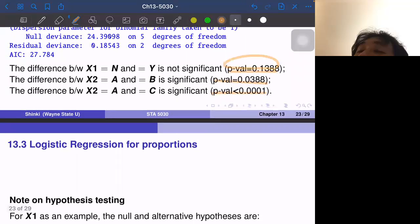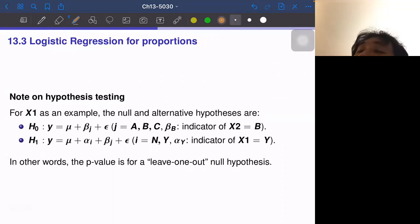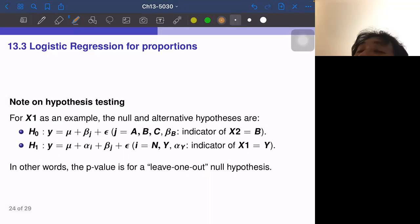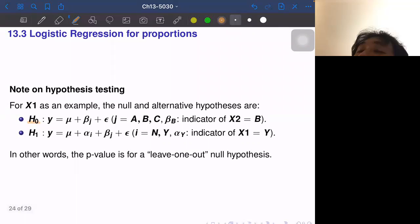And to be exact, what this P value 0.1388 means is basically the testing result with this null hypothesis and this alternative. So actually this is a kind of leave one out null hypothesis. So the H1 is the full model. So to be exact, this is mu plus alpha I, I equals N and Y, but I equals N is the baseline. So this is basically alpha Y times indicator variable of X1 equals Y plus beta A, beta A is the baseline. So beta B times indicator variable of X2 equals B plus beta C times indicator variable of X2 equals C.